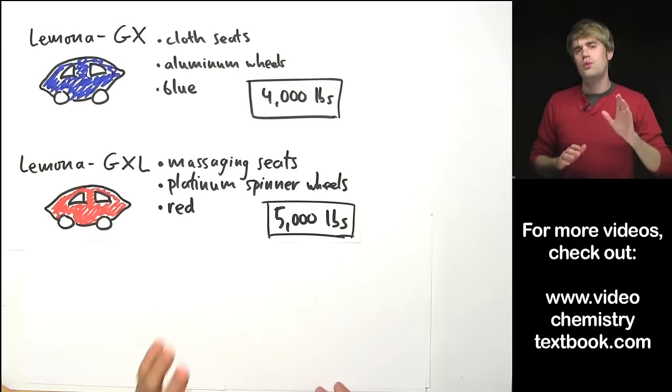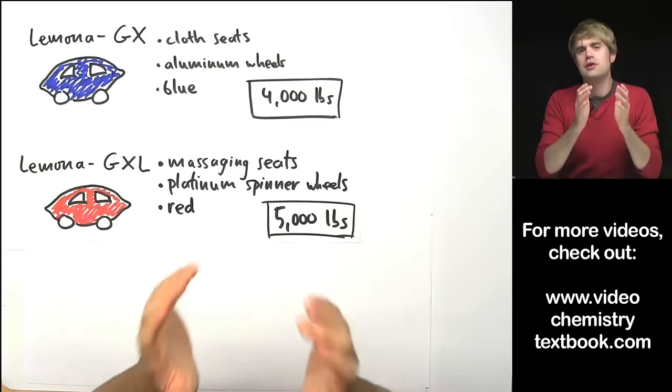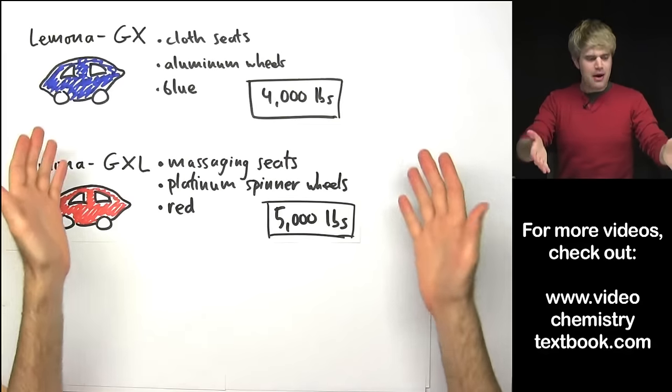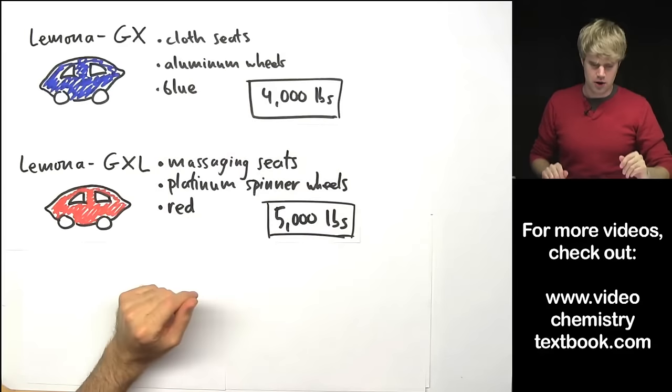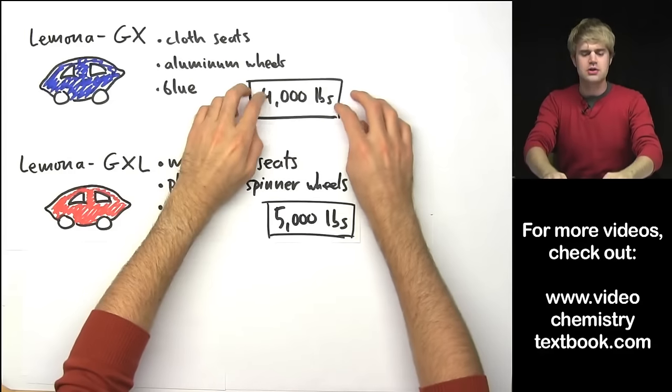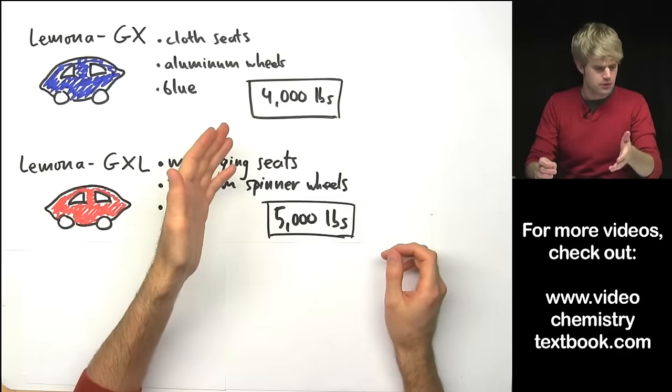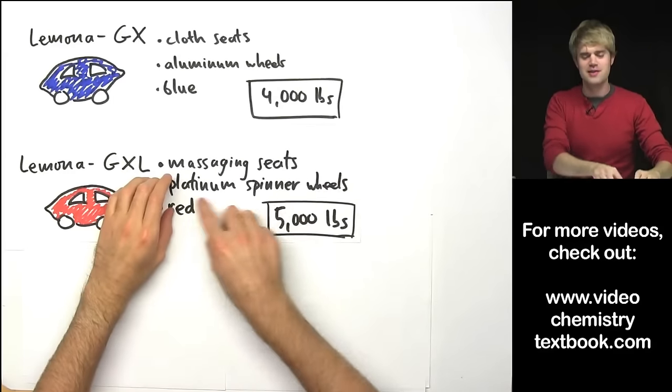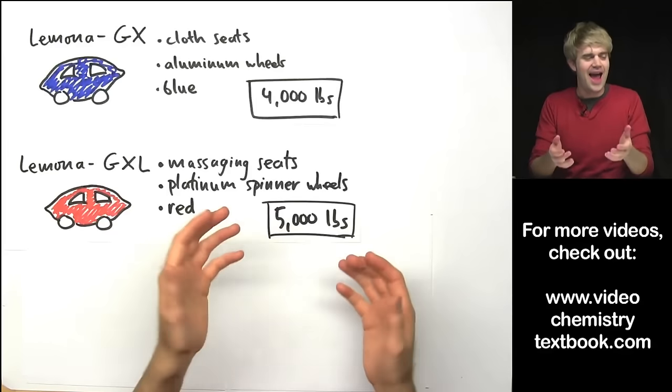Anyway, we said that atomic mass is going to have a lot to do with the idea of averages. So let's think about averages for these two cars. The Lamona GX weighs 4,000 pounds whereas the Lamona GXL weighs 5,000 pounds. It's probably these platinum spinner wheels that really add to that heft.